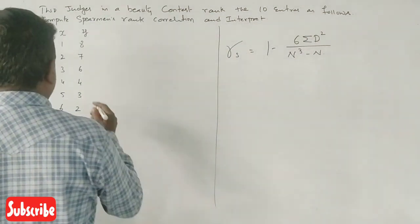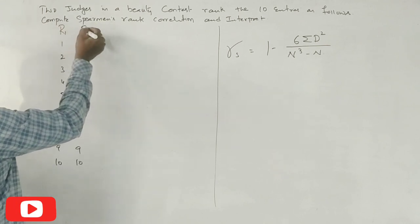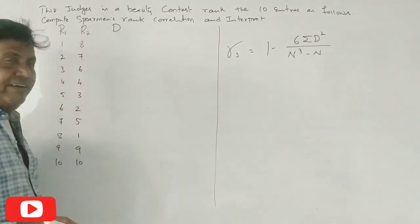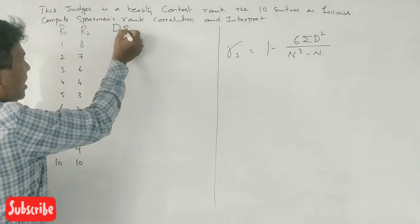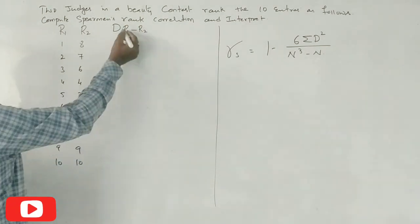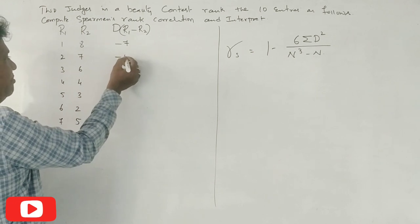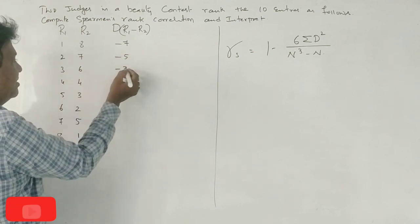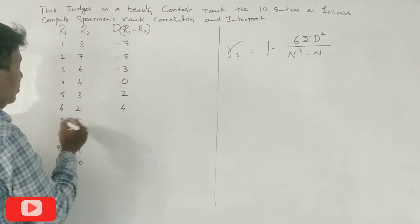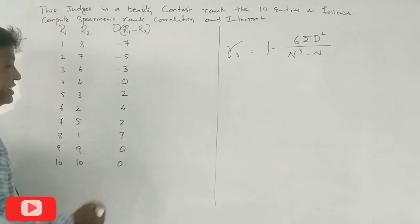So now we have r1 and r2. Now we calculate d. d is r1 minus r2. So r1 minus r2: 5 minus 3 is 2, 6 minus 2 is 4, 7 minus 5 is 2, 8 minus 1 is 7, 9 minus 9 is 0, 10 minus 10 is 0.